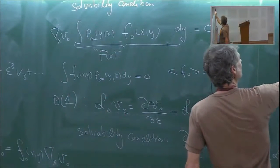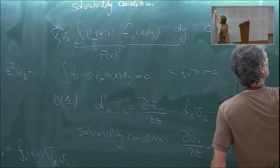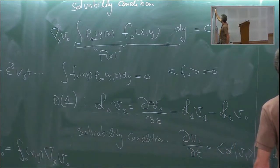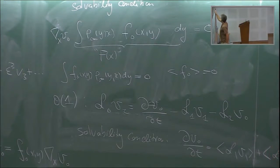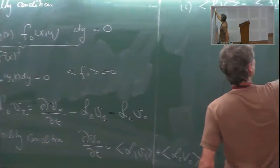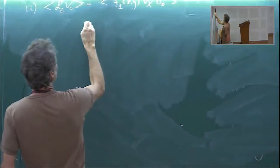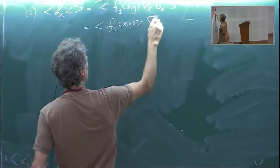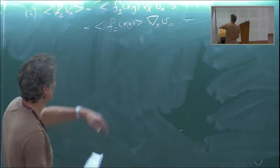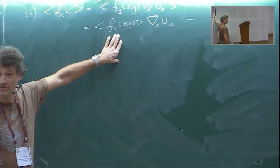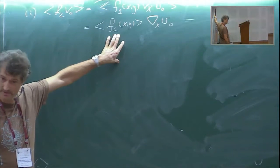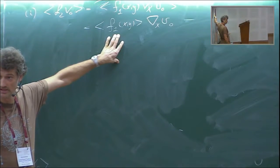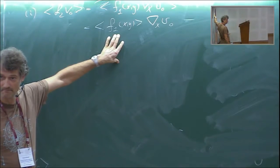Let's look at the easy term L2 V0 first. L2 corresponds to F1(x,y) ∂x, so its average is just ⟨F1⟩ ∇x V0 — a drift coefficient in the reduced equation from the average of F1.